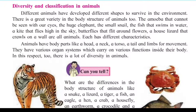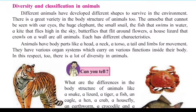Animals have body parts like a head, a neck, a torso, a tail, and limbs. They have various organ systems which carry on various functions inside their body. In this respect too, there is a lot of diversity in animals.